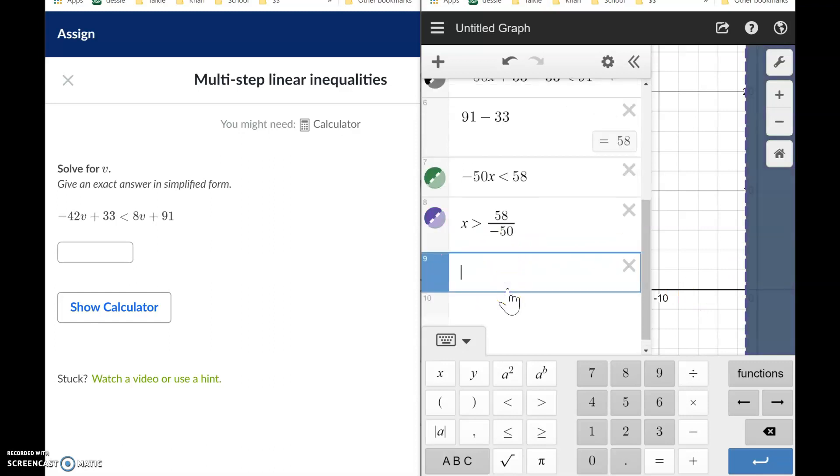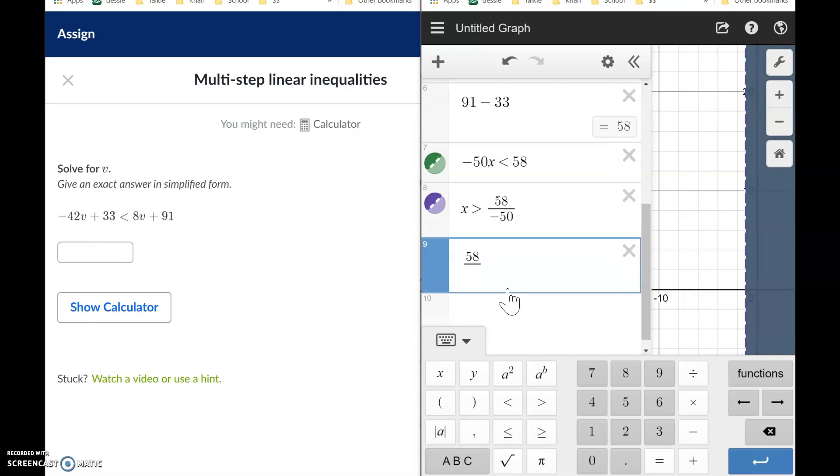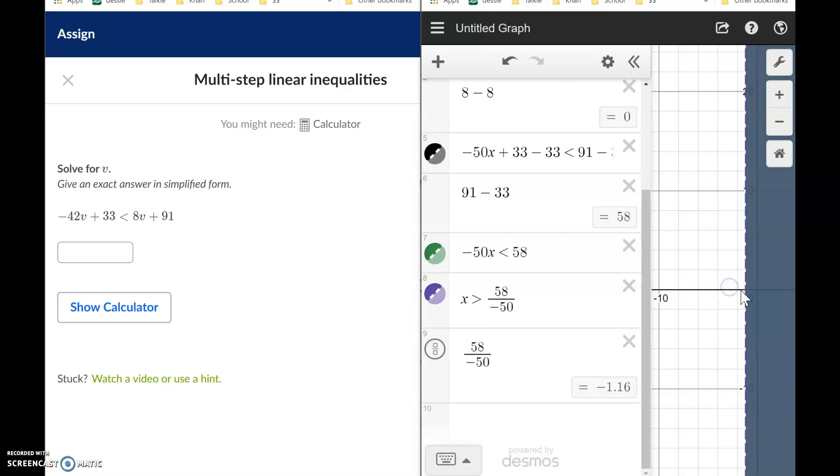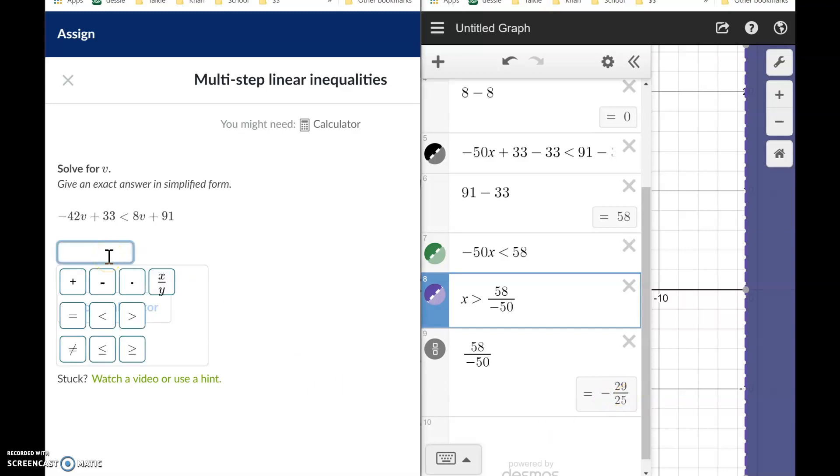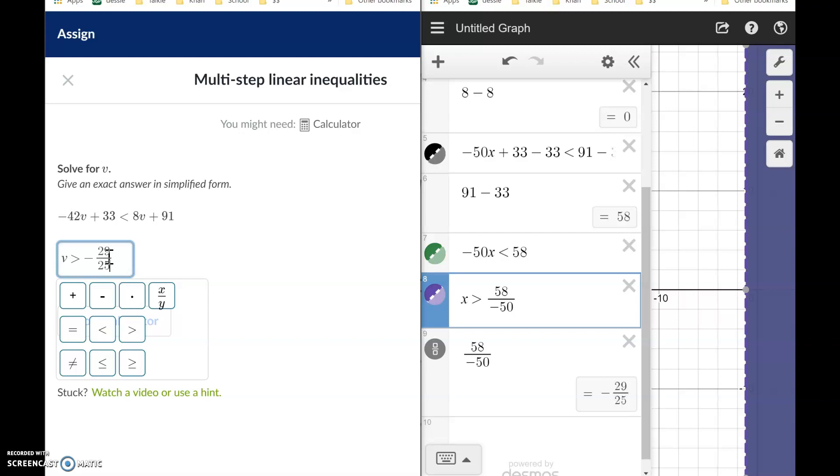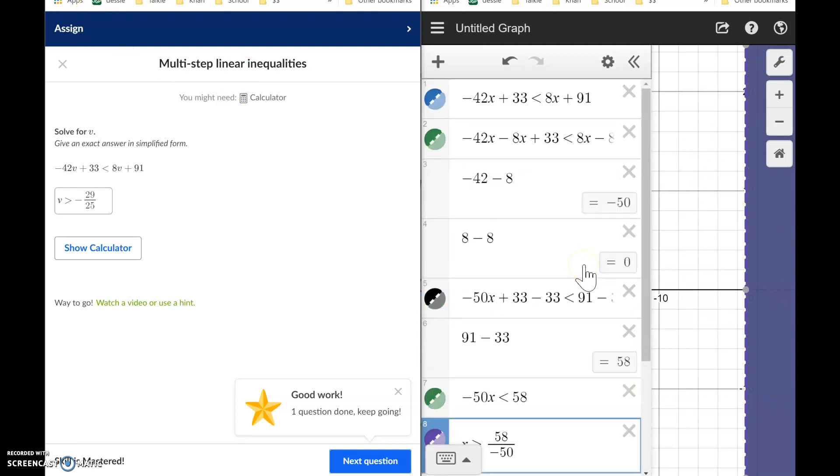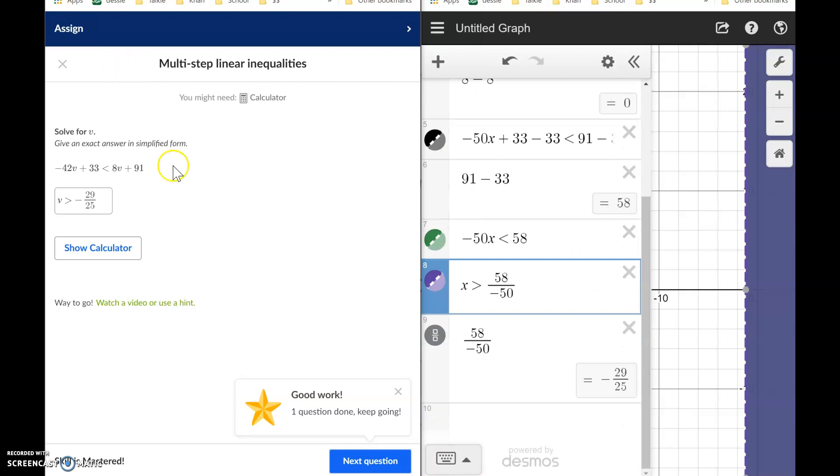I want to know if I can simplify 58 divided by negative 50. Negative 1.16, that's that number I was talking about. What's that simplified? Negative 29 over 25. All right, let me punch it in. V is greater than negative 29 over 25. And that's how you do it with Desmos. I love that you can see that your steps are right or wrong. That's fun. Good luck.